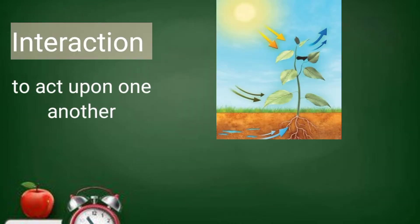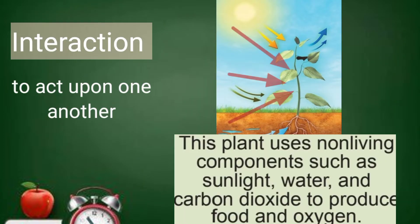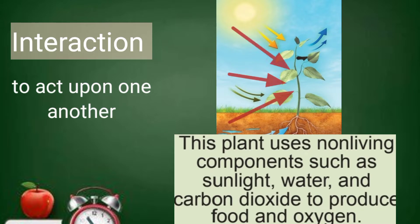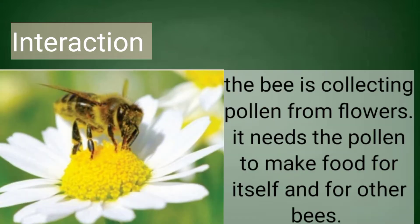What is the meaning of interaction? It means to act upon one another. An example of an interaction between living things and non-living things is shown in this picture. This plant uses non-living components such as sunlight, water, and carbon dioxide to produce food and oxygen. The bee is collecting pollen from flowers — it needs the pollen to make food for itself and for other bees. This is an example of an interaction among living organisms.